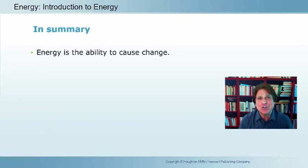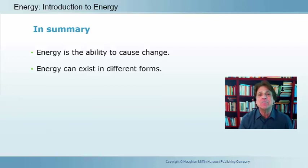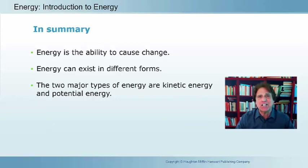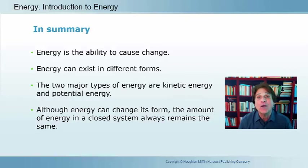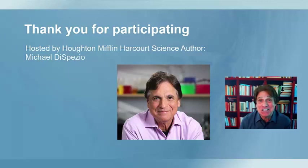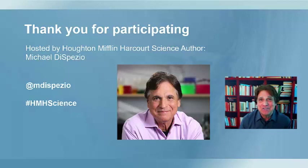In summary, energy is the ability to cause change. Energy can have many different forms or types, and there are two main kinds: kinetic energy, the energy of motion, and potential energy, the energy of position, composition, or condition. Although energy can change its form, the amount of energy in a closed system always stays the same. Thank you for joining me — if you'd like to learn more about science education, visit my Twitter or join us at hashtag HMHScience.